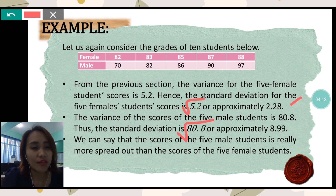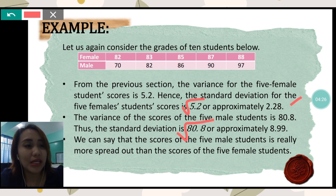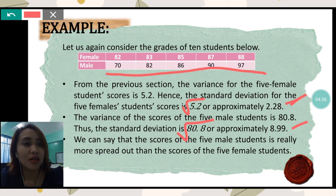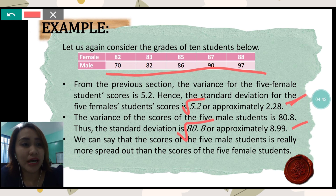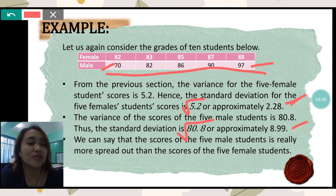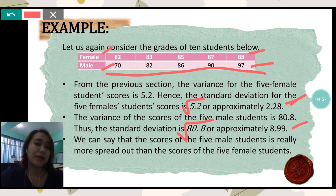We can say that the scores of the 5 male students are really more spread out than the scores of the 5 female students. Since measures of dispersion measure how spread out the scores are, and the standard deviation for the male is 8.99 versus 2.28 for the female, the scores of the male students are more spread out and farther from each other. The male scores range from 70 to a high of 97, whereas the female scores range from 82 to 88 — which are much closer to each other.